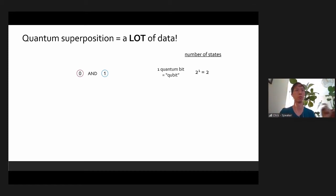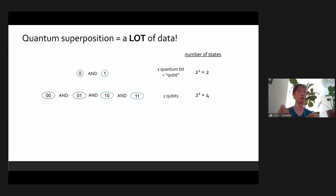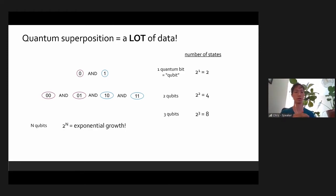If you have one quantum bit — the analog of a regular bit, which we'll call a qubit — there will be two states that one qubit can have: zero or one, or both zero and one. For two qubits, if two of them can be zero and one at the same time, then you get all possible combinations, which is two squared, which is four. For three it's two cubed, which is eight. In general, for n qubits the number of states is two to the n, which is exponential growth, which is very, very large. For context, if you had 300 of these qubits, you would have more states than there are atoms in the entire universe.